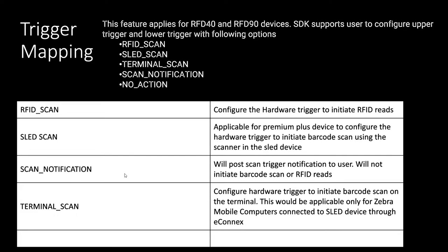For the three SKUs of the RFD 40 and 90 — Premium Plus, Premium, and Standard — there are various combinations to map trigger keys for different functionalities: RFID scan, scanner notification, or terminal scan. Terminal scan is a scenario where you have a standard RFID device with an MC terminal connected to an RFD 40, and you use the hard trigger to drive the scanner on the terminal connected through an adapter on the SLED device.